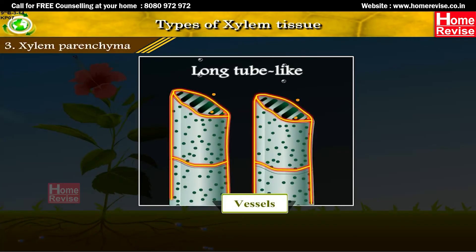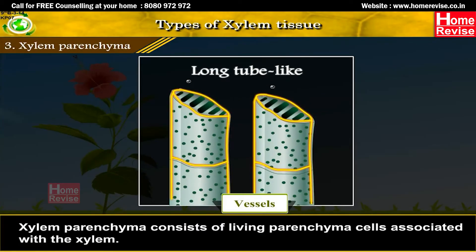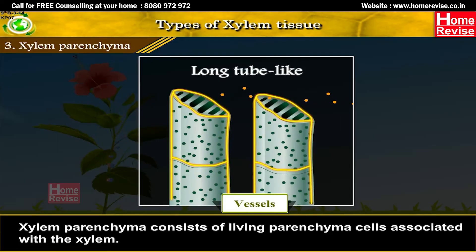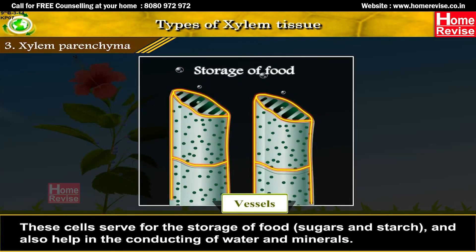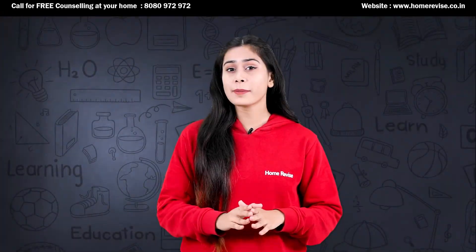Xylem parenchyma consists of living parenchyma cells associated with the xylem. These cells serve for the storage of food such as sugars and starch, and also help in the conduction of water and minerals.